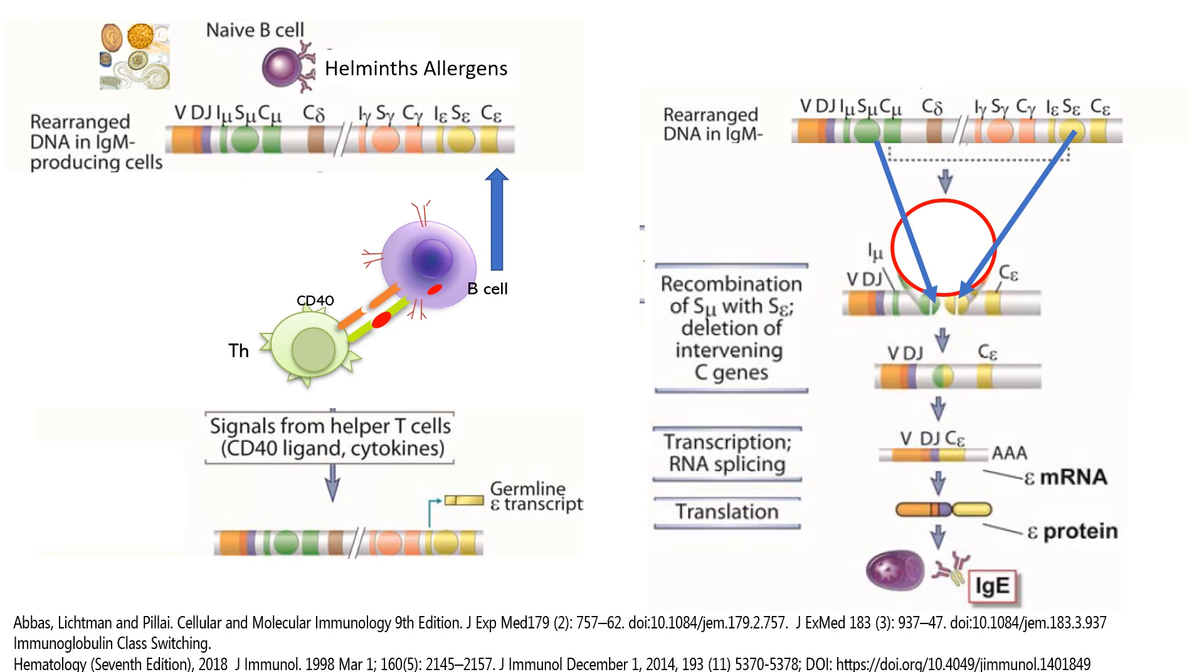So this is the way that these plasma cells clip out all the other isotypes and they go directly to IgE while the variable region is identifying the same allergen or helminthic infection.